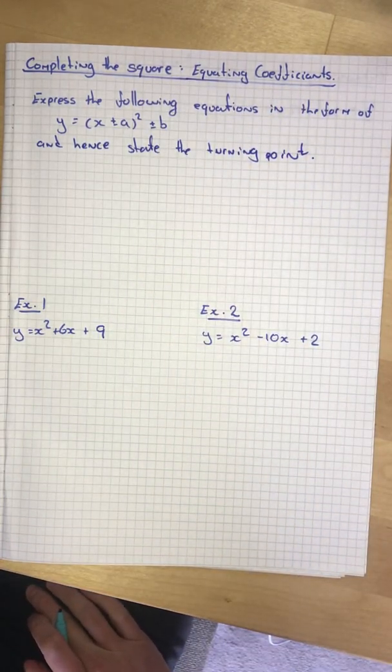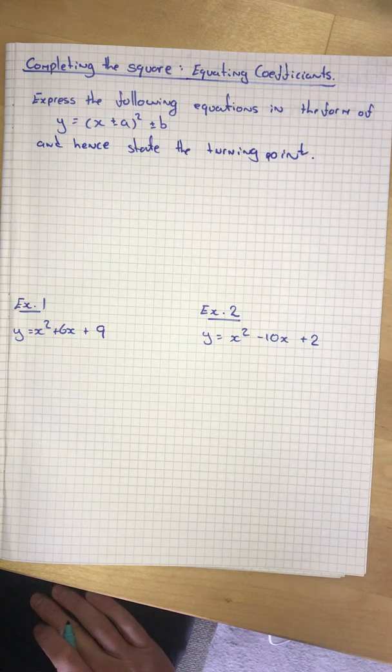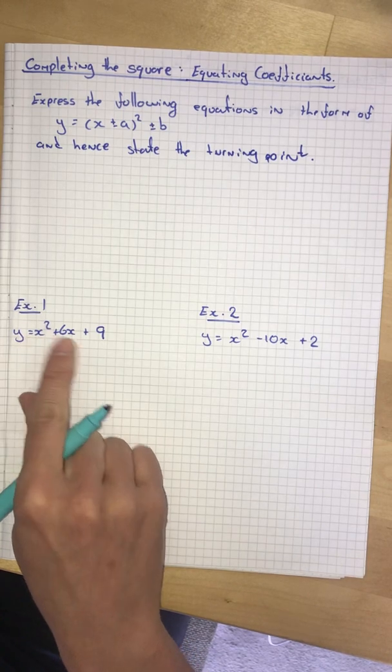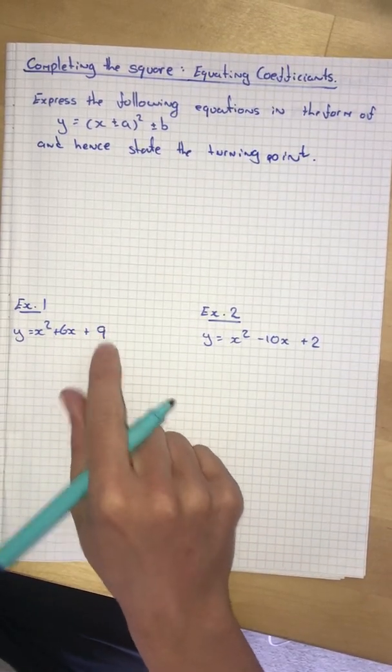Let's look at those two words. Equating means just making equal and coefficients are the multipliers of the terms. So if we looked at this one the coefficient of the x squared is 1, the coefficient of the 6x is 6, the coefficient of the 9 is just the 9.